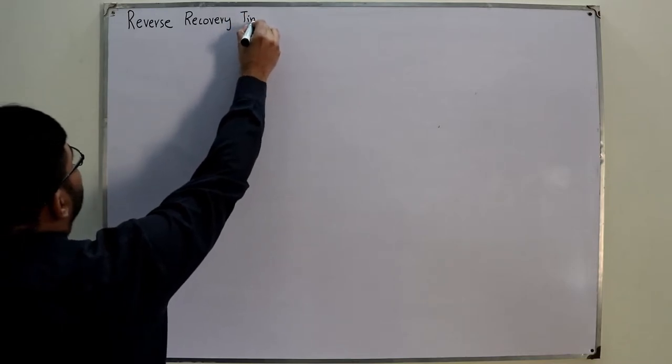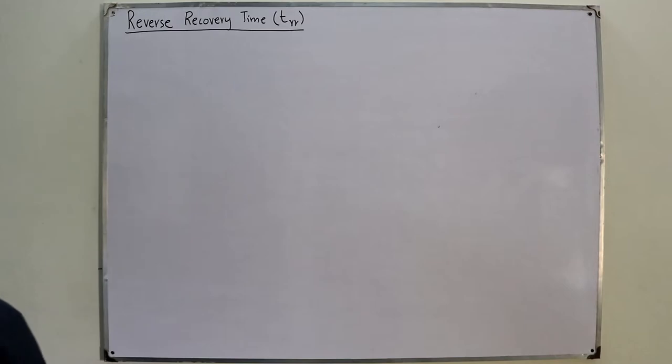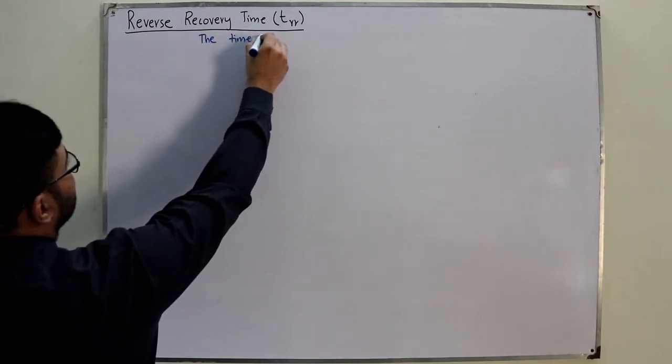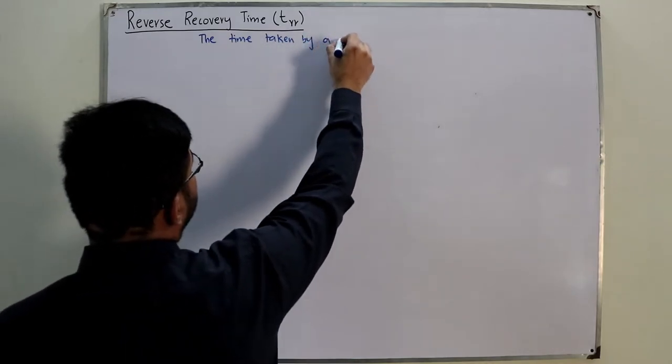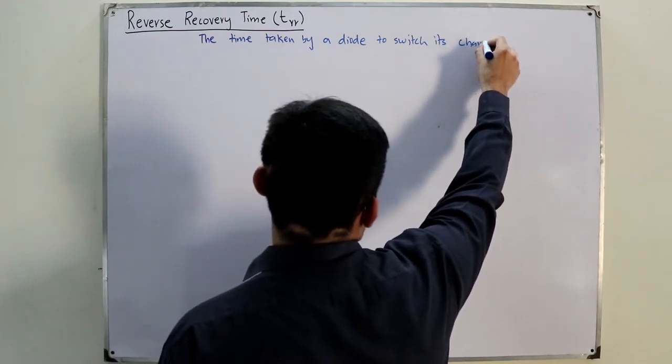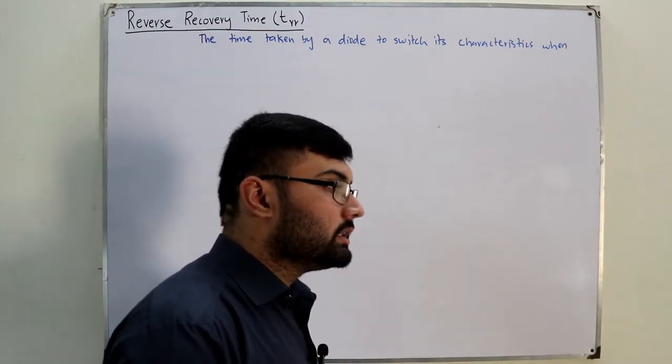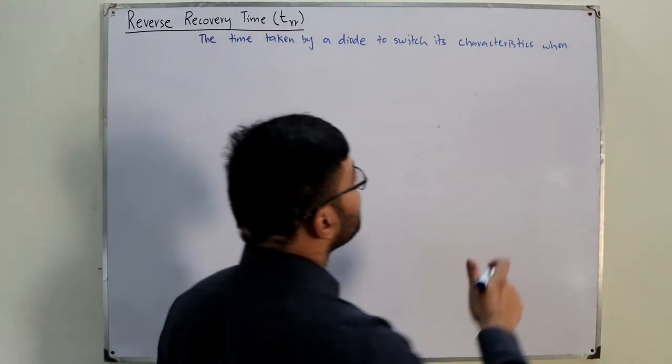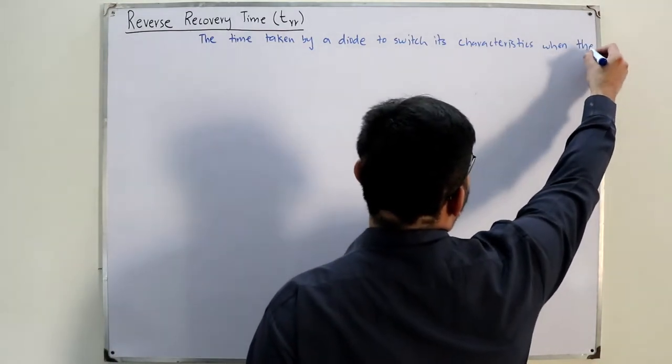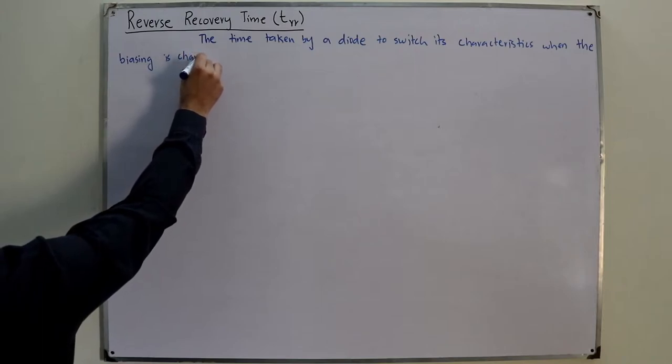It's the reverse recovery time, denoted by a small t with the subscript rr. So we have t_rr. That's the reverse recovery time. Write down the definition with me.